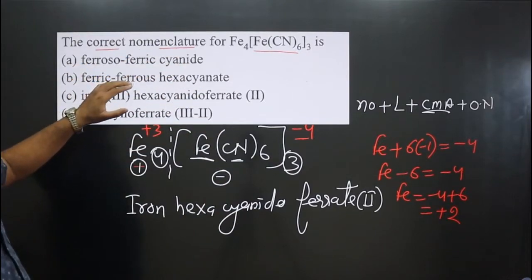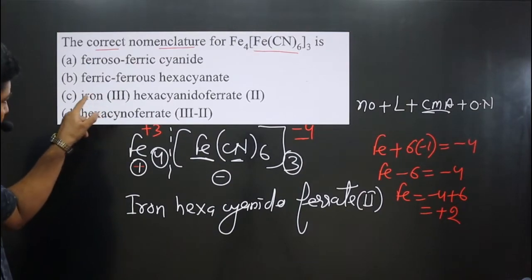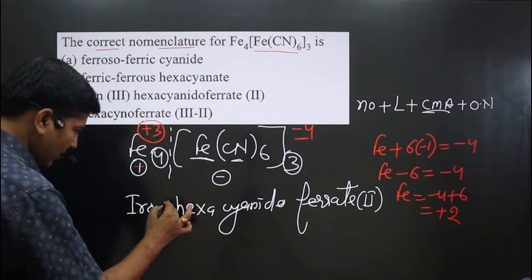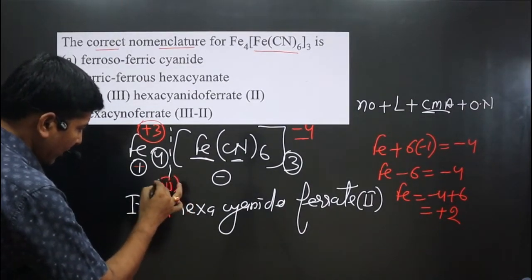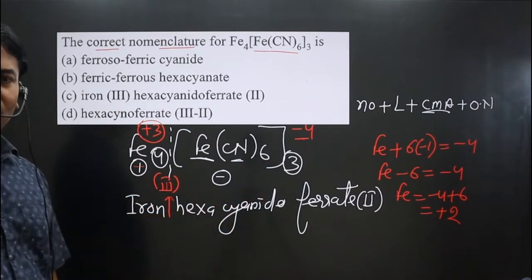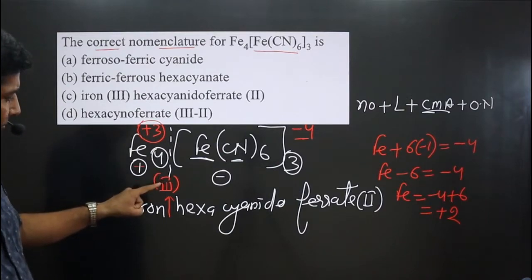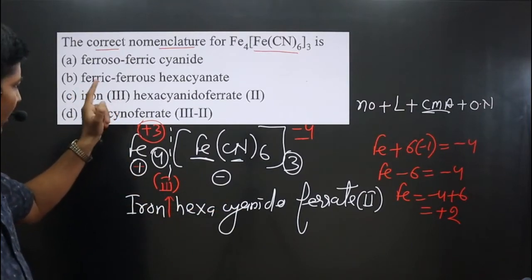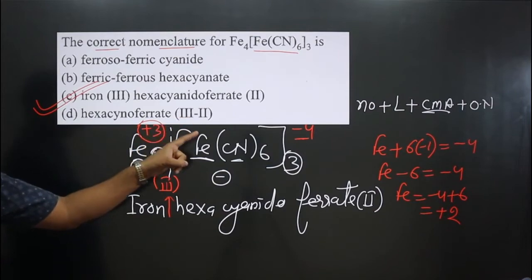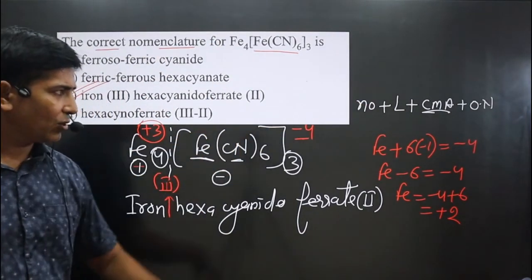Looking at the options, we can see 'iron(III) hexacyanidoferrate(II)' — the iron(III) refers to the counter ion being in plus three oxidation state. In general, we don't need to mention the oxidation number of the counter ion, but if it is given in the option, we can include it. So the correct name is iron(III) hexacyanidoferrate(II), and Option C is correct. The other options are not possible because they don't have both irons correctly placed, or they don't follow the correct order for naming the complex.